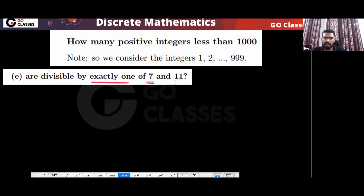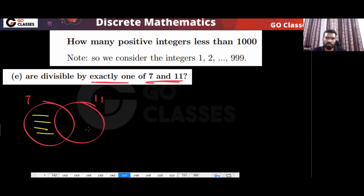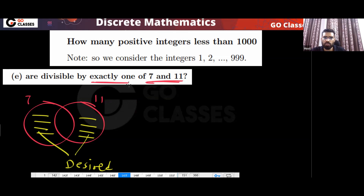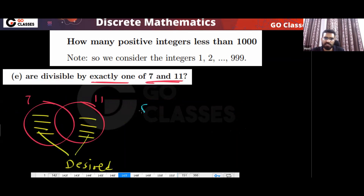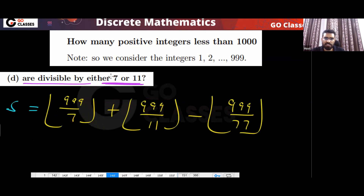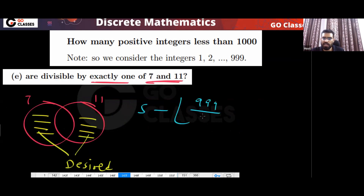Next: exactly one of 7 and 11. Looking at the Venn diagram, you want only the non-overlapping parts — the desired area. Let's call the answer S (divisible by 7 or 11). From S, you remove the intersection part — floor(999/77).